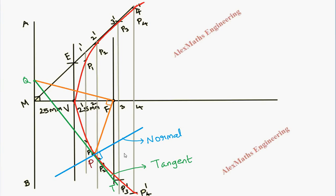Using this procedure, we can draw a tangent at any point on the curve: join that point to the focus, draw a perpendicular line to PF to meet the directrix, join that meeting point to P, and that gives the tangent. Drawing a perpendicular to the tangent gives the normal.